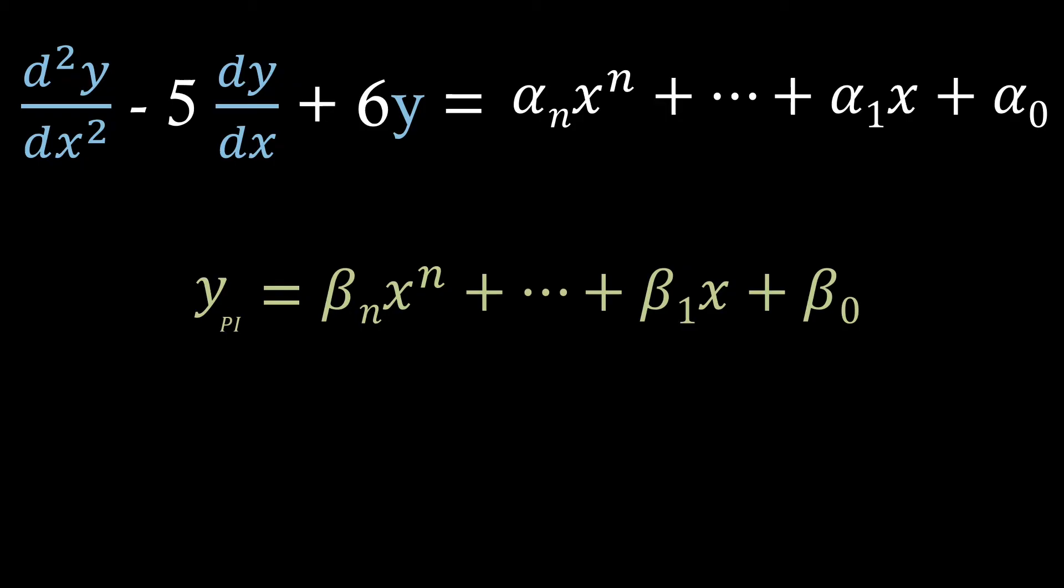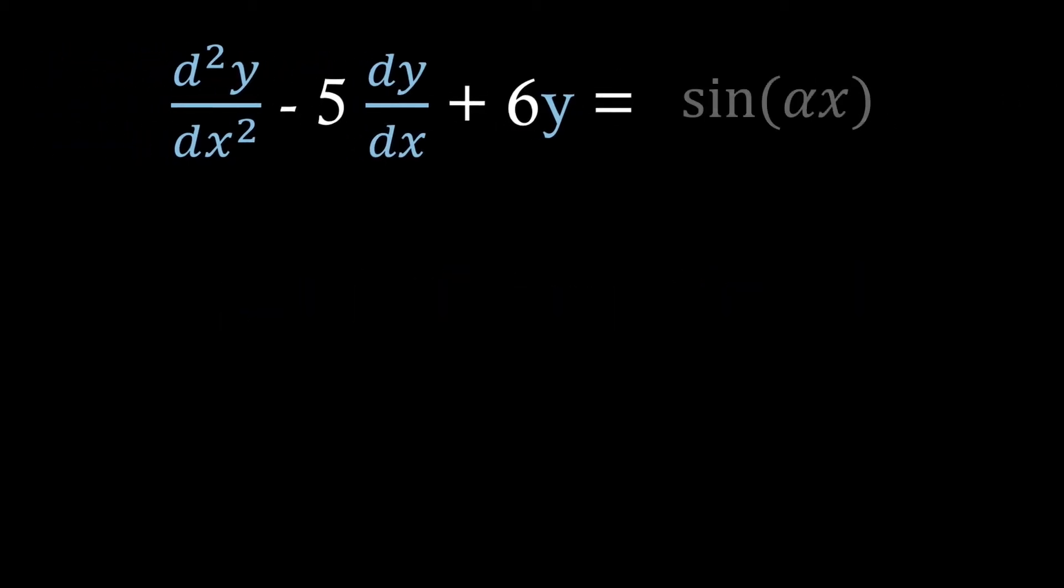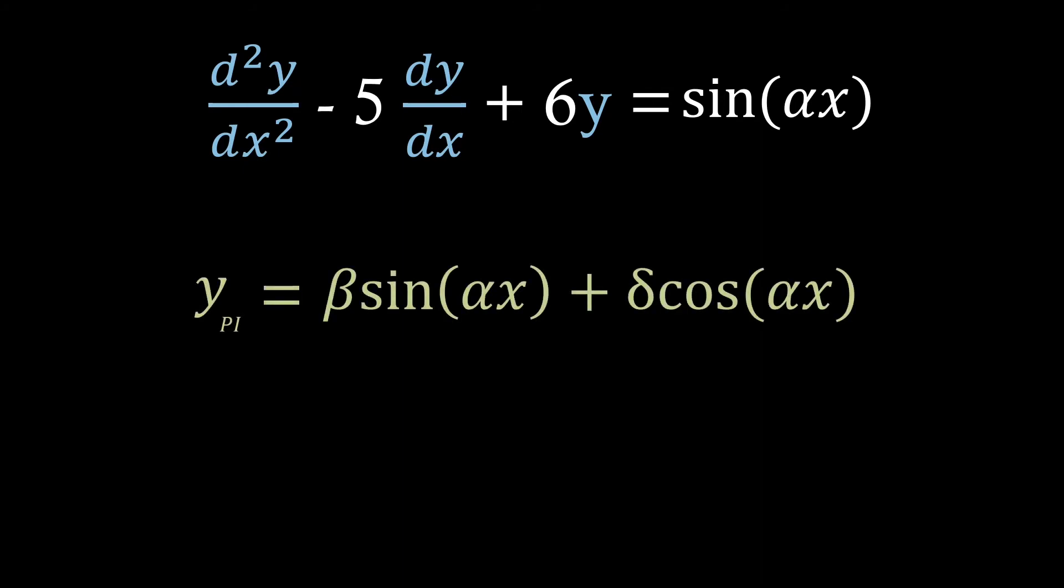Now for the next solution we might want to try. Say on the right hand side we have a trig function or a hyperbolic function. For example, sine alpha x, where alpha is just a constant. Then we're going to want to try the trig or hyperbolic function in its most general form. So as we're differentiating, we need to include both sine and cosine, and then we'll put constants in front to give some generality to our solution.